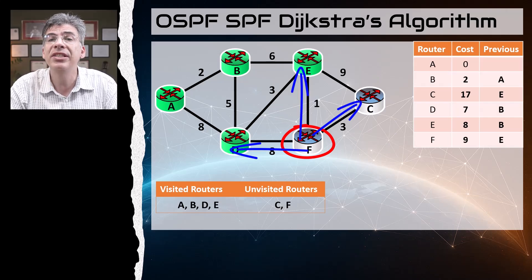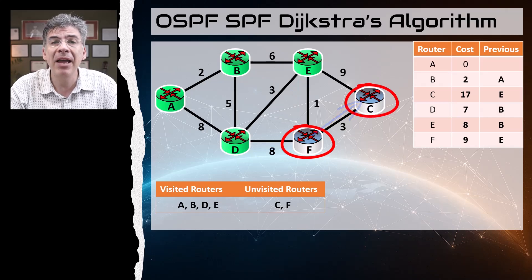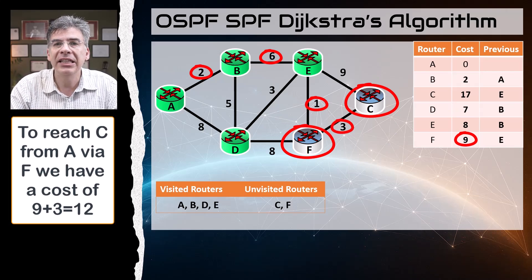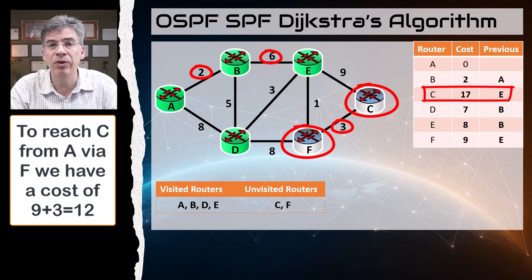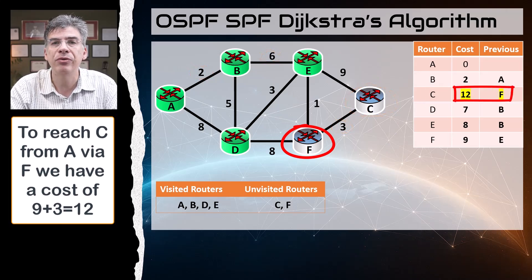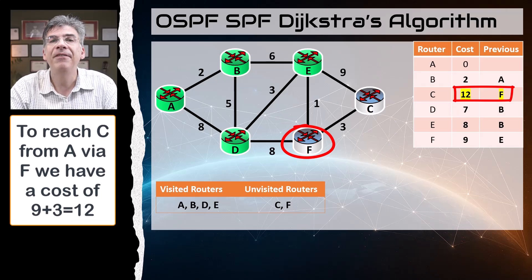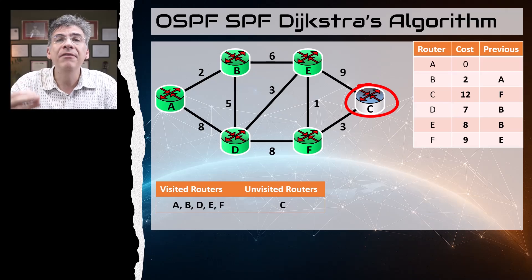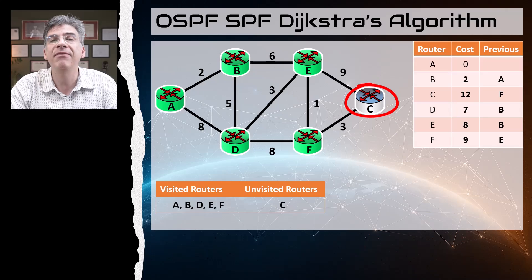Moving on to router F, we look at all directly connected unvisited routers — we only have one left, which is C. To get to C from F, the total cost is nine plus three, for a total of twelve. Twelve is less than seventeen, which is already in the table, so we replace that value and put router F as the previous router. F now becomes a visited node. Once we get to our last router, C, there are no more unvisited nodes directly connected, so it too automatically becomes a visited node.